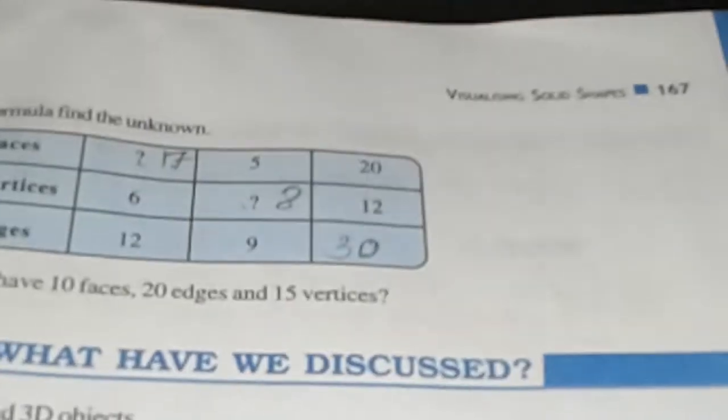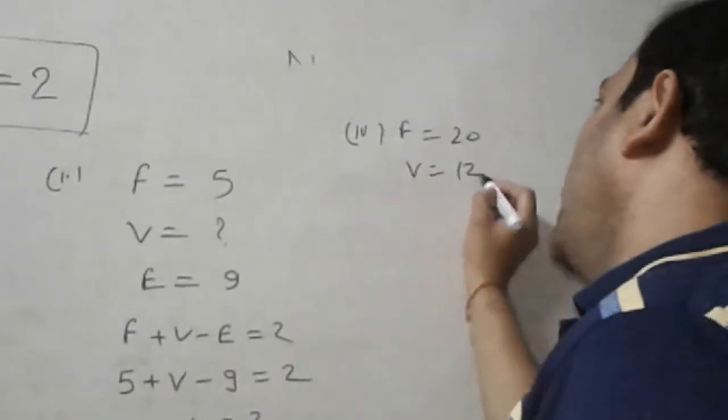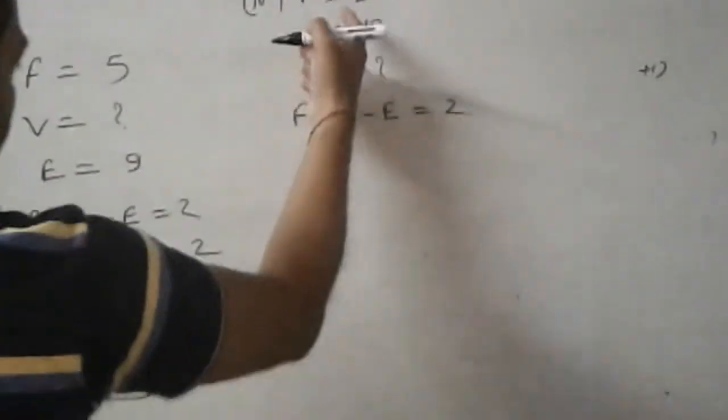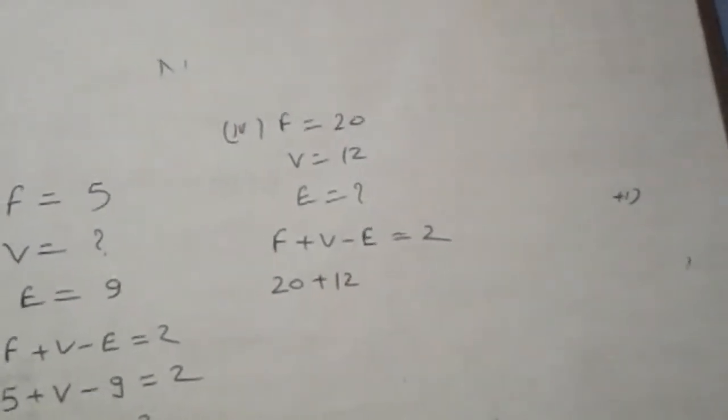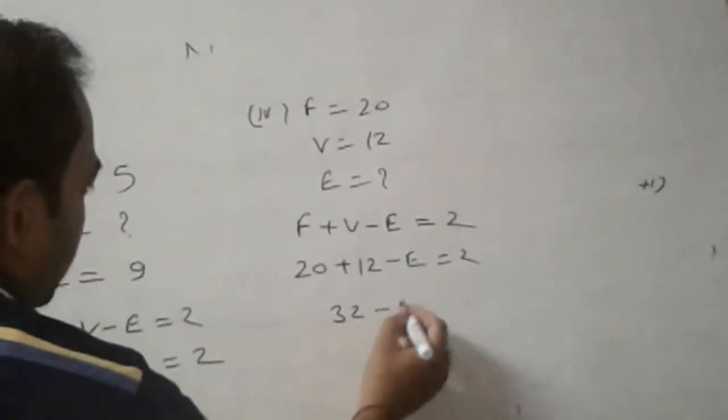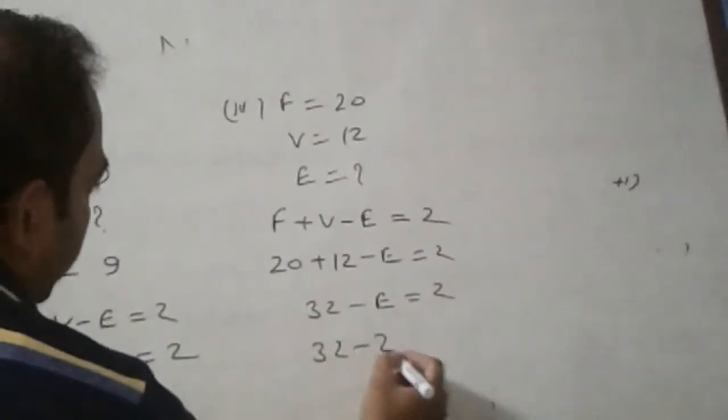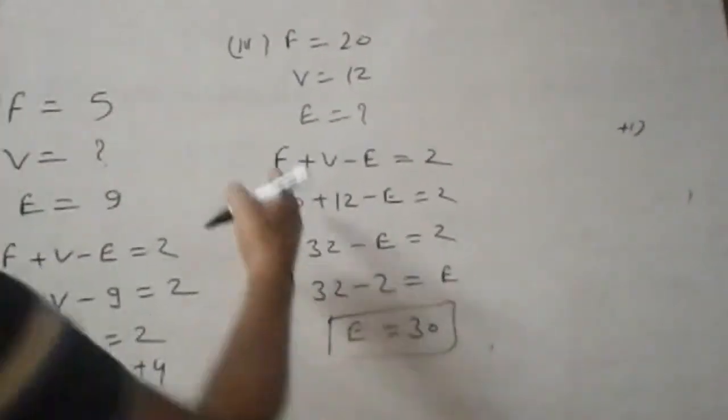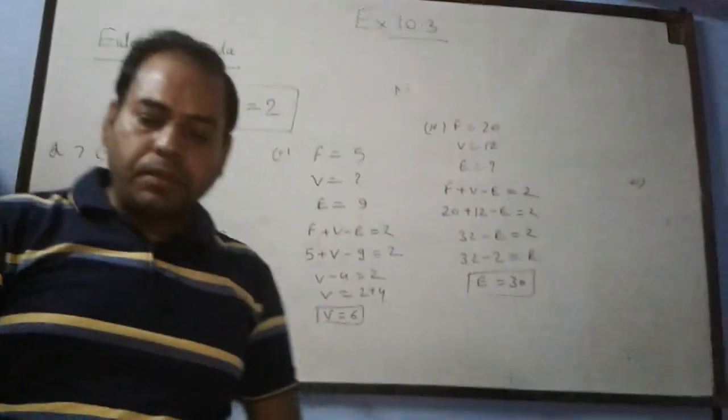Last part of question number 7. F is 20 and V is 12. Third part: faces is equal to 20, vertex is 12, and we need to find edges. Again apply Euler's formula: F plus V minus E equals 2. Put the value of F and V: 20 plus 12 minus E equals 2. 32 minus E equals 2. 32 minus 2 equals E, and E is equal to 30. The number of edges in this solid will be 30.